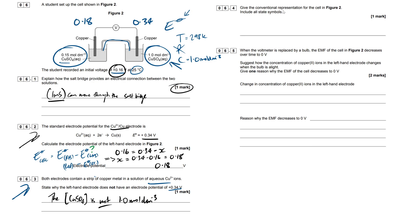So let's move on. So we have to give the conventional representation for this cell in figure 2, include all state symbols. So it's always a good idea, even if they don't ask for the state symbols, to include it anyway, because it is important. For these conventional cell diagrams, we always want to separate the phases by a single vertical line. So if there's a phase change, we need to make a note of that. So the way I like to do it is always start in the middle.